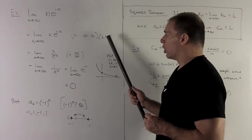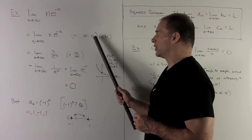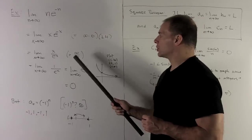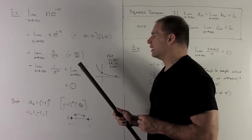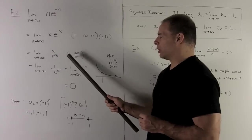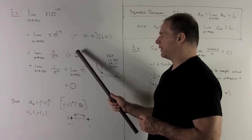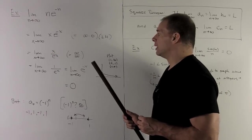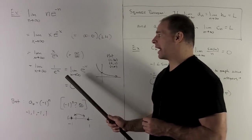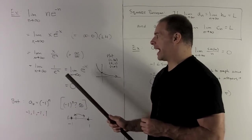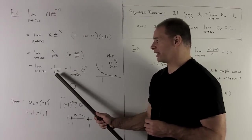So, L'Hopital's rule applies. This is an indeterminate form of 0 times infinity. So what I'm going to do is move the e to the x to the bottom, just take away the minus sign. And then, when I do the limit, we're looking at something of the form infinite over infinite. L'Hopital's rule now applies. I can take derivative of the top, derivative of the bottom. So it gives me 1 over e to the x. Derivative of e to the x is e to the x.